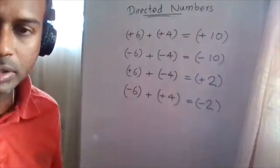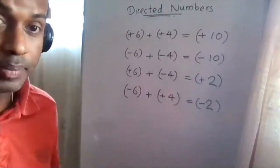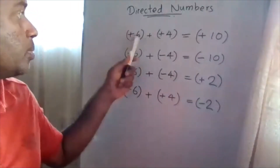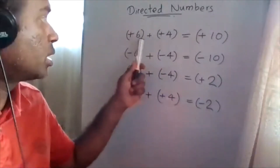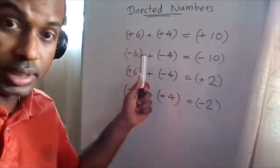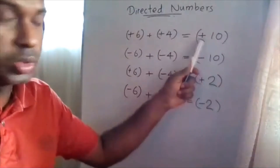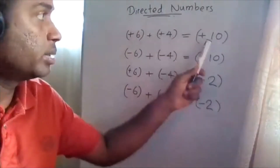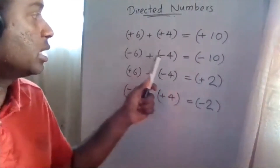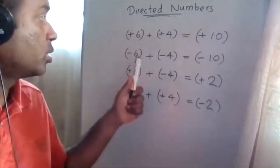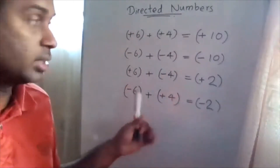We are going to discuss directed numbers. Positive six addition positive four — both are in the same signs, so the answer is positive ten. Negative six addition negative four — both are in negative sign, so you add them together and it is negative ten.